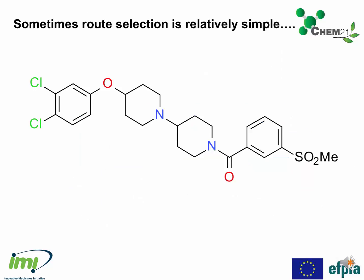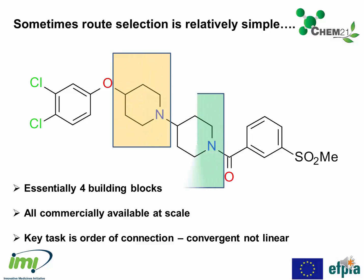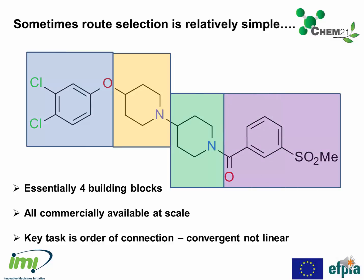Sometimes route selection can be relatively simple, as we can see from this molecule here. The choice is fairly straightforward — essentially four building blocks. All of these building blocks are commercially available at scale, and the key task is really the order of connection. It's a convergent, not linear process. We can see the four building blocks being highlighted here, and in practice, this is the disconnection — this is how the molecule was made.